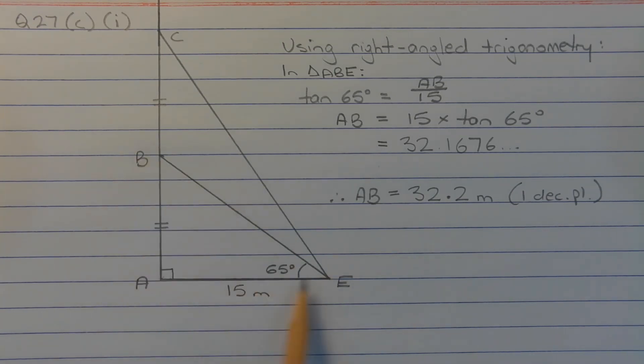Consider triangle ABE. Side AB is the unknown side that we're asked to find the length of, and this is the side that is opposite the known angle of 65 degrees. Now the side that is known, which is side AE, is 15 meters, and this is adjacent to the known angle of 65 degrees.